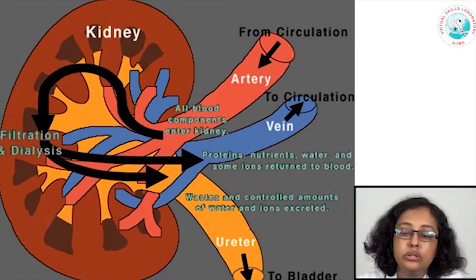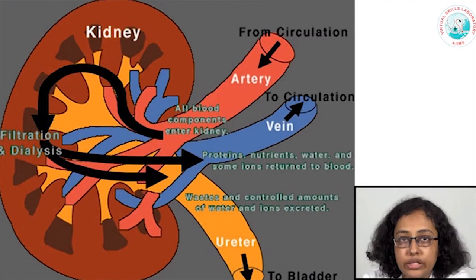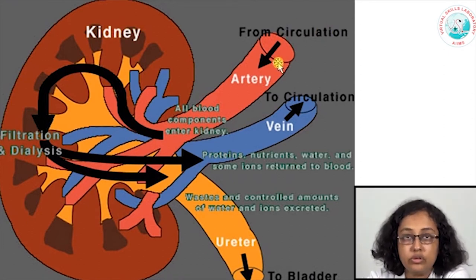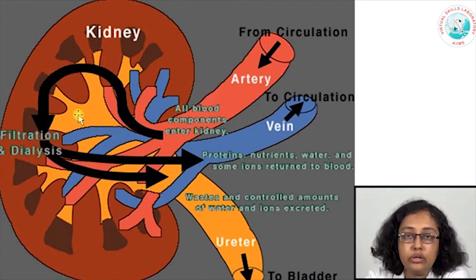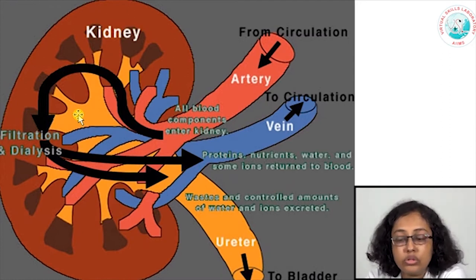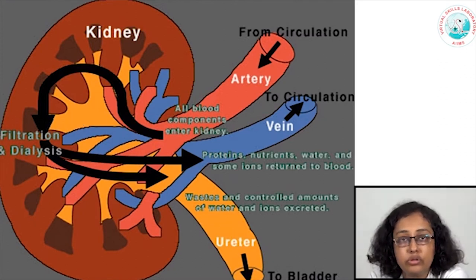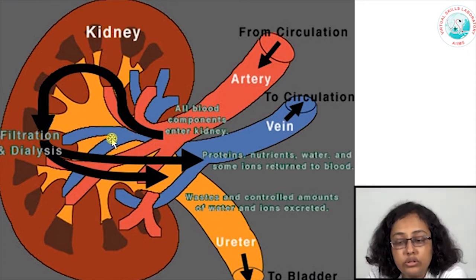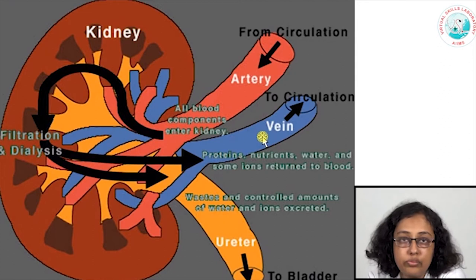As you know, the kidneys are basically involved in cleaning the waste products generated in the body. Blood enters the kidney from the systemic circulation via the renal artery, where it gets filtered in multiple units or nephrons. There are glomerular filtration barriers where unnecessary waste products, controlled amounts of water, and electrolytes are excreted as urine, passed through the ureters to the urinary bladder, while essential components — blood proteins, nutrients, required water, and ions — are returned to the systemic circulation via the renal vein. Basically, the kidneys clean toxic waste products and maintain fluid-electrolyte balance in the body.